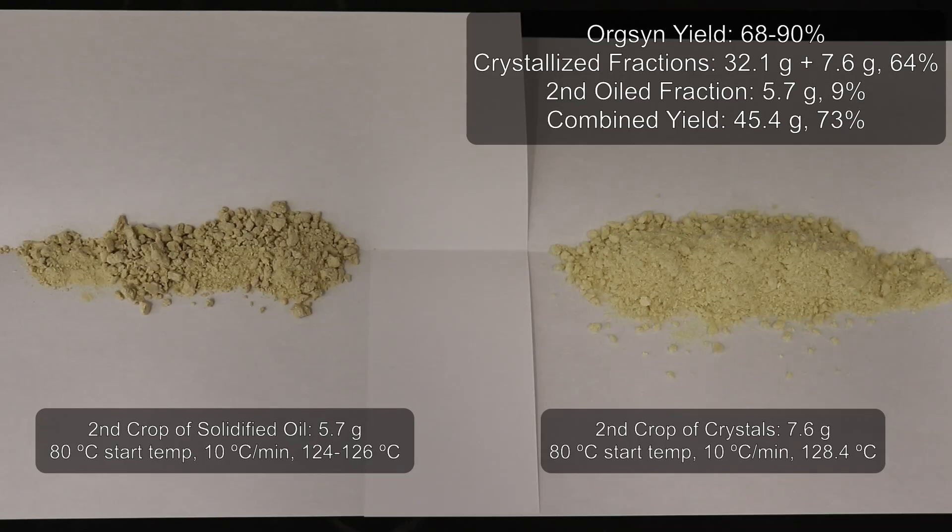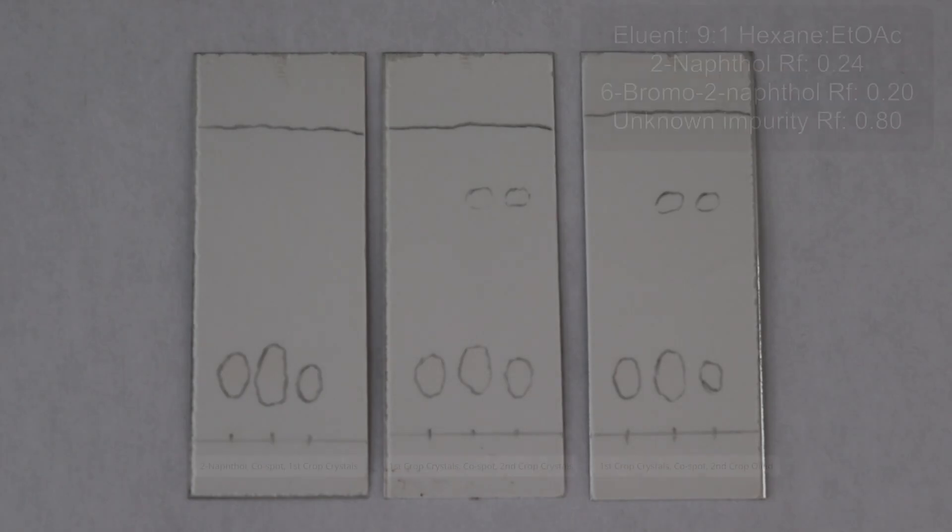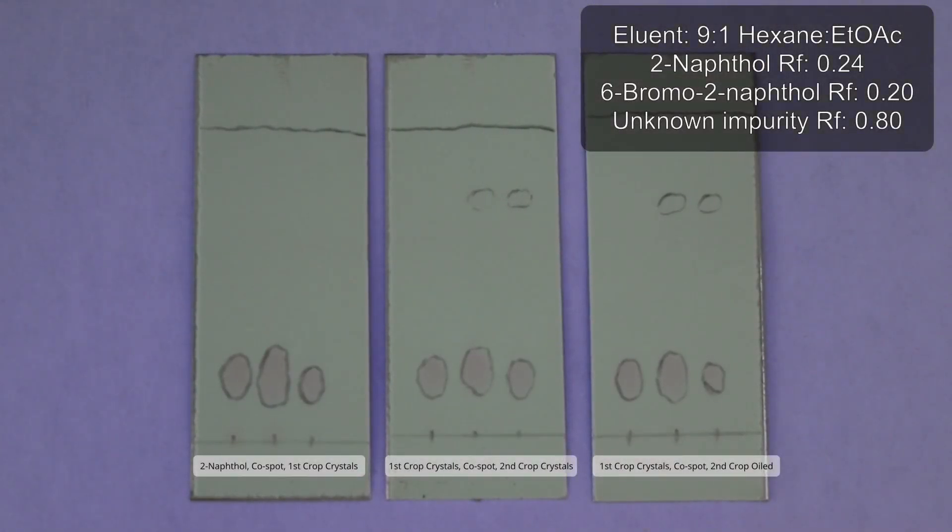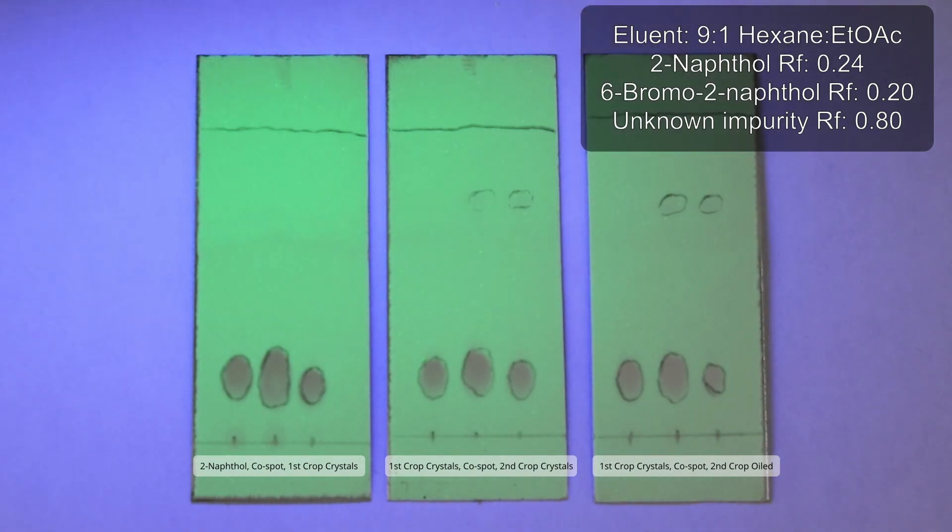From this second recrystallization, I got another 7.6 grams of crystals and 5.7 grams of more oiled material. I also ran some TLCs. The leftmost plate shows 2-naphthol against the first crop of crystallized material, and there's not much difference in RF between 2-naphthol and 6-bromo-2-naphthol. I couldn't find an eluent mixture that successfully separates them.